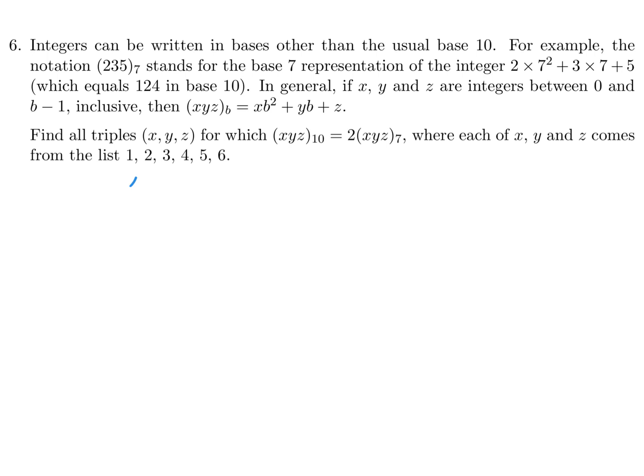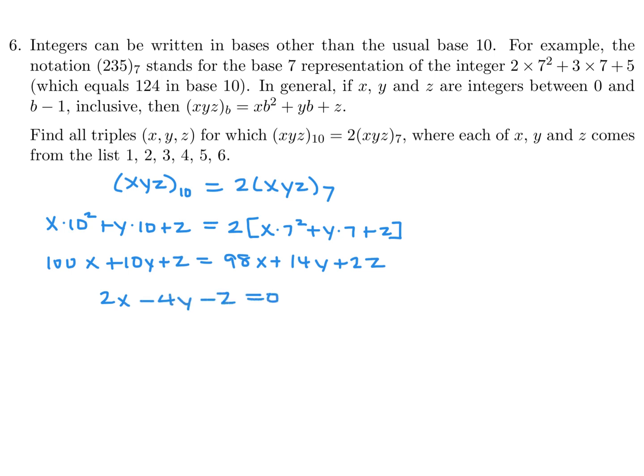Alright, so (X,Y,Z) to the base 10 is equal to 2 times (X,Y,Z) to the base 7. Let's expand this. This is going to be X times 100 plus Y times 10 plus Z, and that is equal to 2 times X times 49 plus Y times 7 plus Z. So this is 100X plus 10Y plus Z, and this is going to be 98X plus 14Y plus 2Z. Put everything on one side and we're going to get 2X minus 4Y minus Z equals 0.